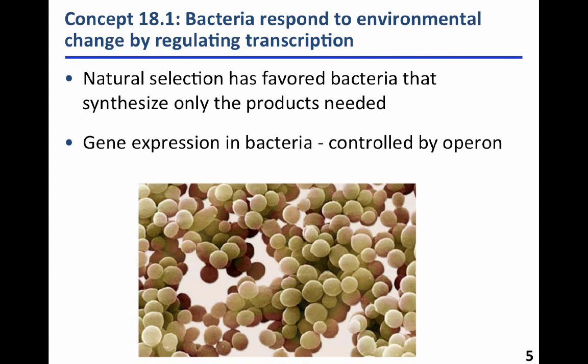Bacteria also need to be able to respond to the external environment and to environmental change, and they can regulate transcription — what genes are activated, transcribed, and translated into proteins during their single-celled lives. Natural selection will favor bacteria that are not producing every single polypeptide possible, but only those they need right now. Gene expression in bacteria is controlled by a system called the operon, and that's going to be the major theme in this lecture.